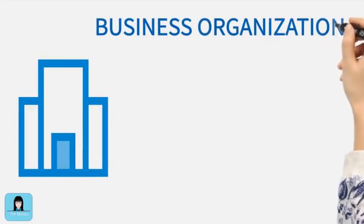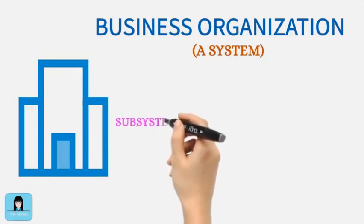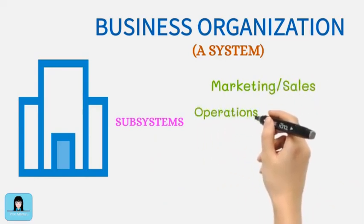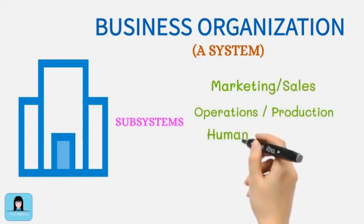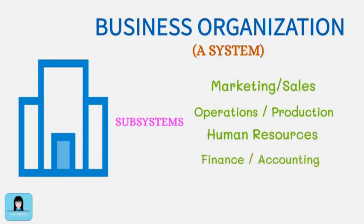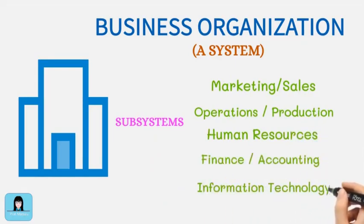A business organization can also be considered a system. Its components or subsystems are departments, such as marketing and sales, operations, human resources, finance and accounting, and information technology. Each department has its function and is accountable for information relevant to them.